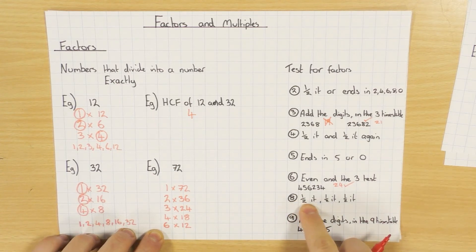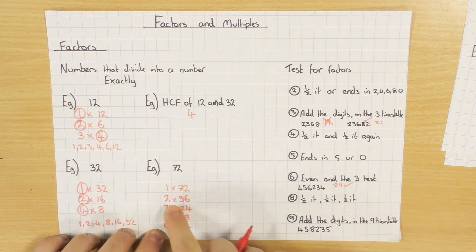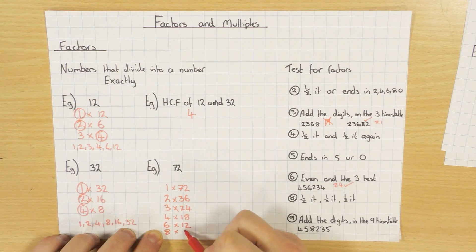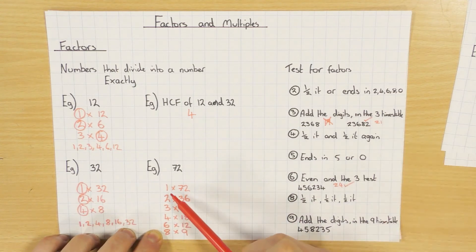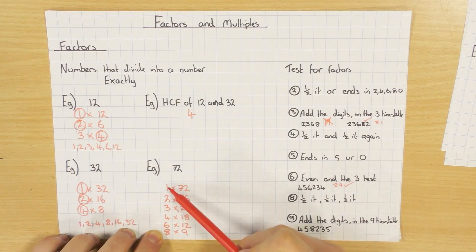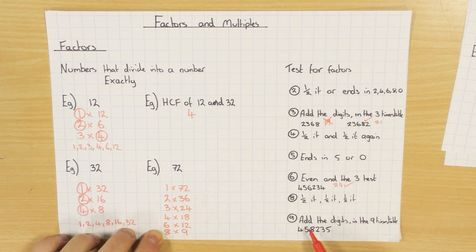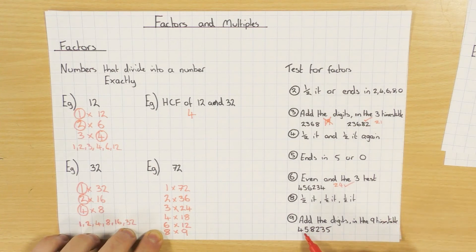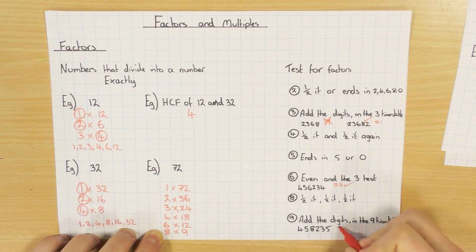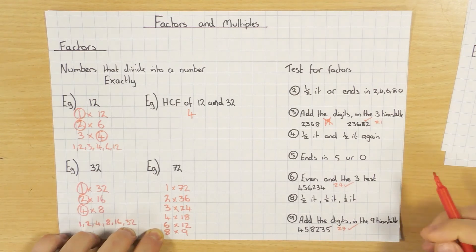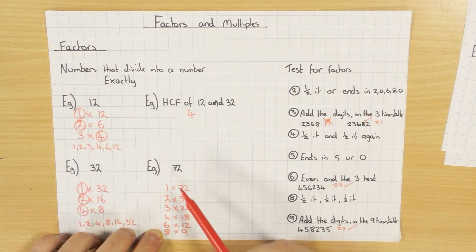To test if 8 is a factor, all you do is half it, half it, and half it again. Half of 72 is 36, half again is 18, half again is 9. So 8 is definitely a factor, and it's 8 times 9. Now I can stop because I'm going to go back on myself. Just as a quick note, you can also test if 9 is a factor: add the digits and if the sum is in the 9 times table, then yes 9 will be a factor. For 72: 7 add 2 is 9, and 9 is of course in the 9 times table.